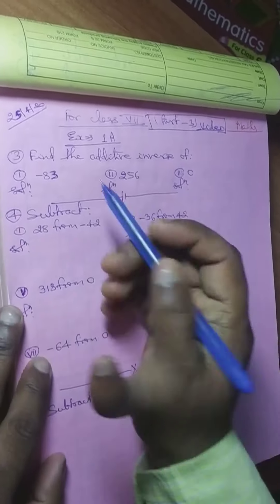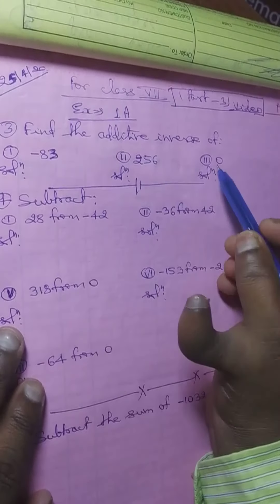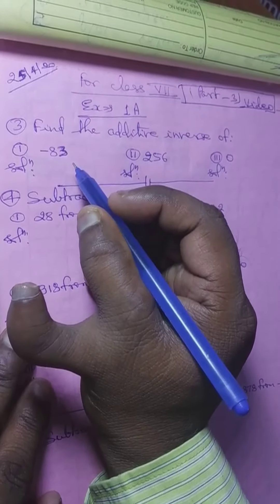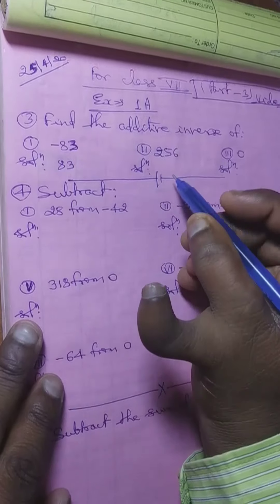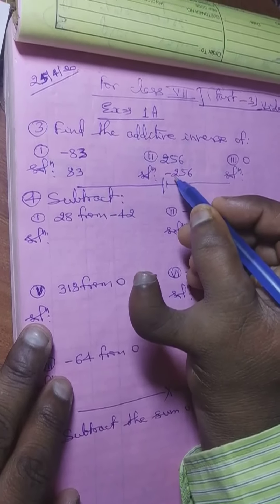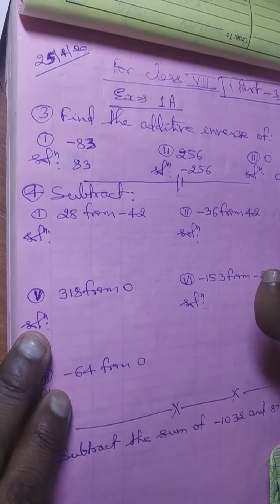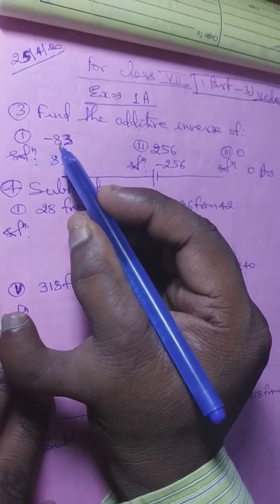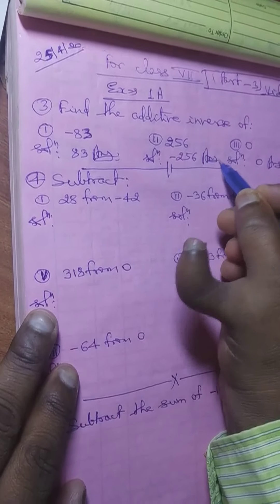Students, the third question is: find the additive inverse of minus 83, 256, and 0. The additive inverse is found by writing the integer with the opposite sign. So the additive inverse of minus 83 is plus 83, the additive inverse of 256 is minus 256, and since 0 is neither negative nor positive, the additive inverse of 0 is 0.